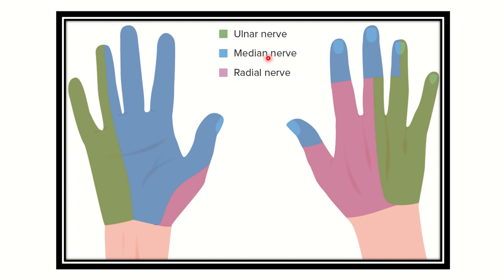On the other hand, the median nerve supplies the thumb, index, middle, and part of the ring finger. The radial nerve supplies mainly dorsally — the thumb, index, and part of the middle finger. The remaining area — the thenar area — is the area of interest here.